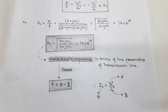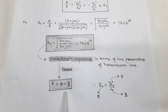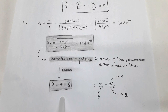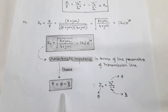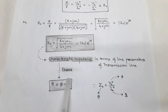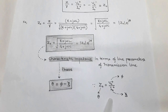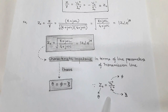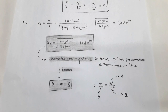The phase of the characteristic impedance is θ = φ − ζ, because Z₀ = V₀⁺/I₀⁺, where the forward voltage has phase φ and the forward current has phase ζ. Taking the ratio gives θ = φ − ζ, obtained by bringing ζ to the numerator side where its sign changes to minus.